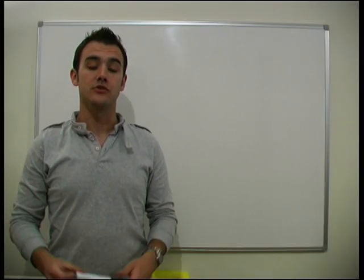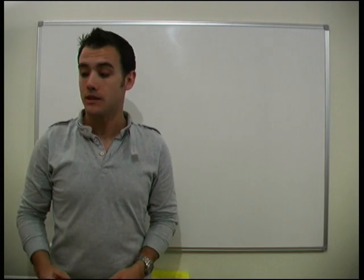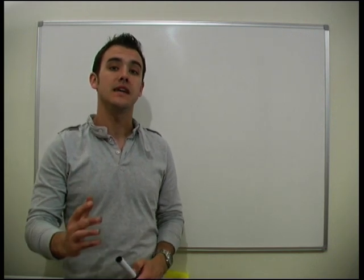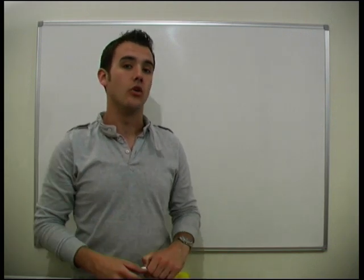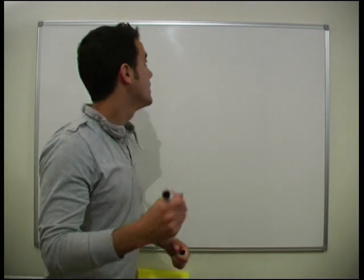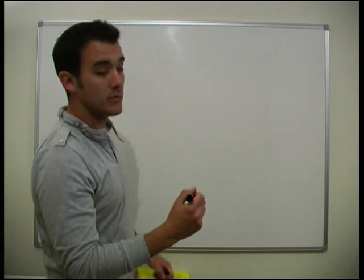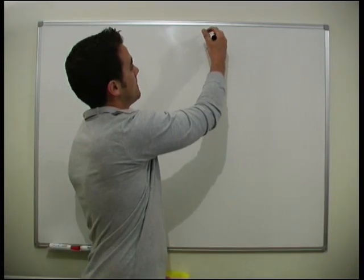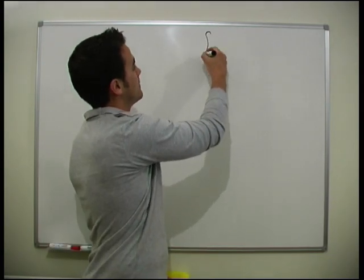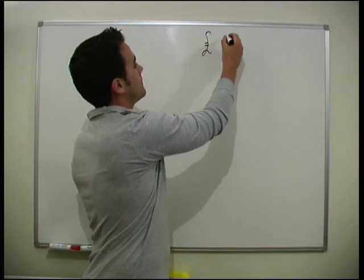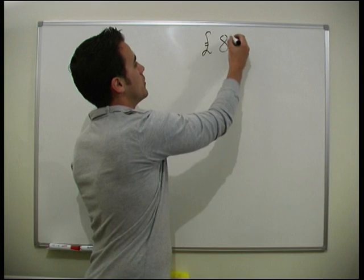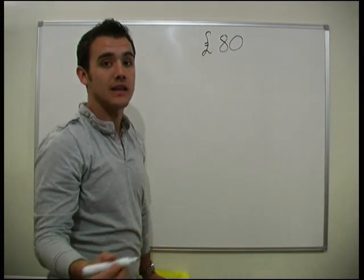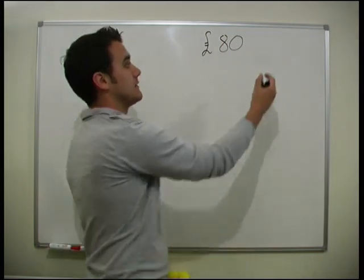The next lesson is on percentages and we're going to start off by finding the VAT on something we want to buy from the shops. We go to the shops and find out that what we want to buy is £80. We need to calculate the VAT on that.